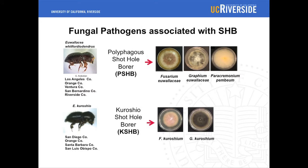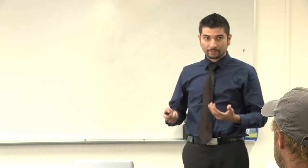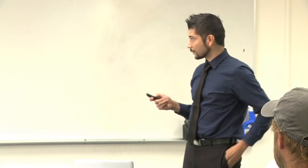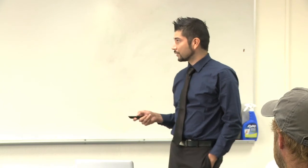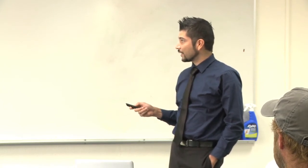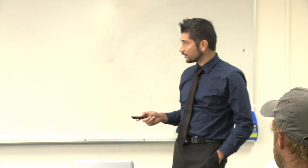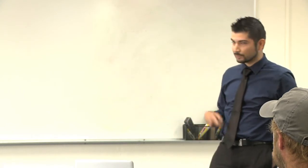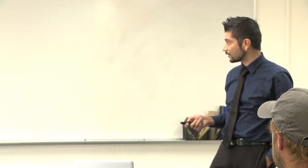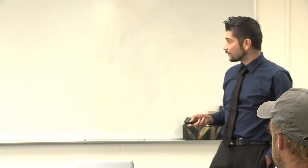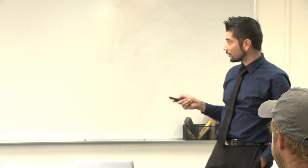Now I want to talk about some specifics of the fungal pathogens associated with this pest. This is polyphagous shot hole borer — first trapped in 2003 and then identified on a plant host in 2012 on avocado, when it was first reported formally. It has since been named Euwallacea forticulus. The first report came out of Los Angeles, and it's since been found in adjacent counties, seeming to spread north and south. The fungi associated with polyphagous shot hole borer are Fusarium euwallaceae, Graphium euwallaceae, and Paraacrimonium pembeum.